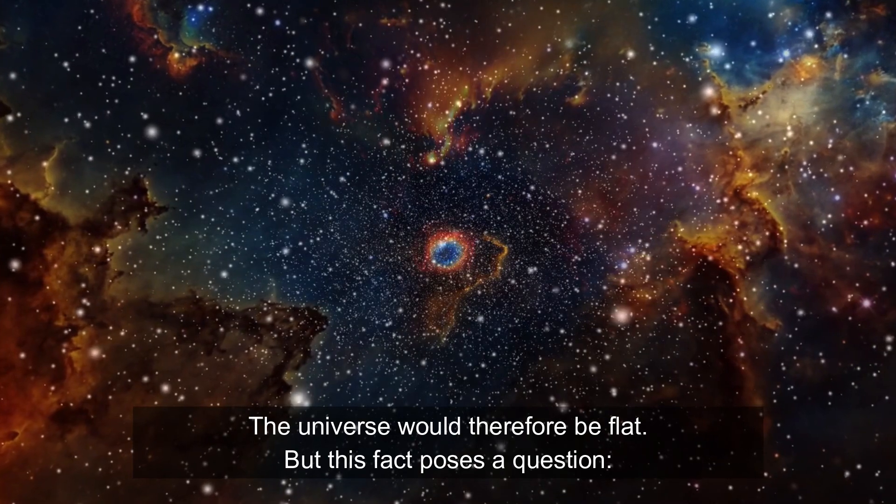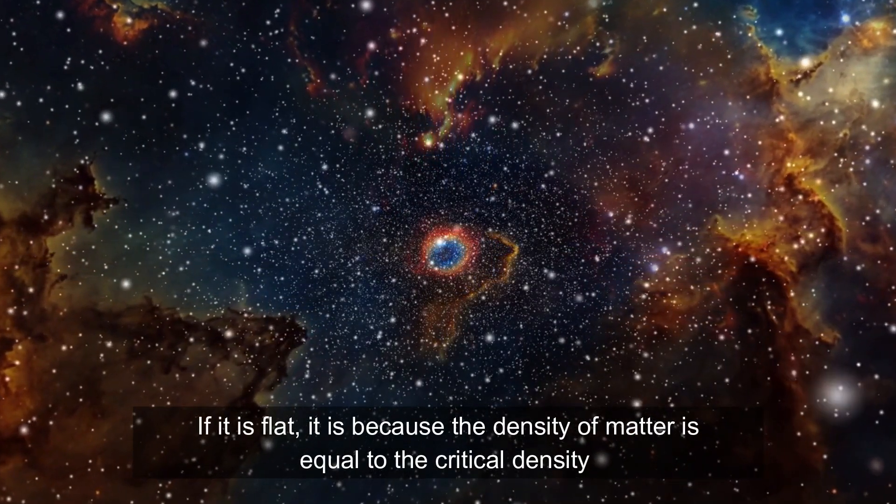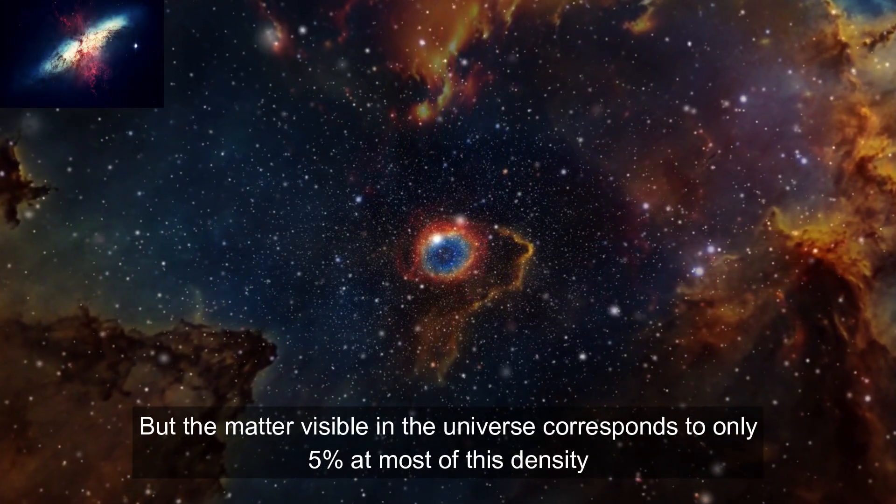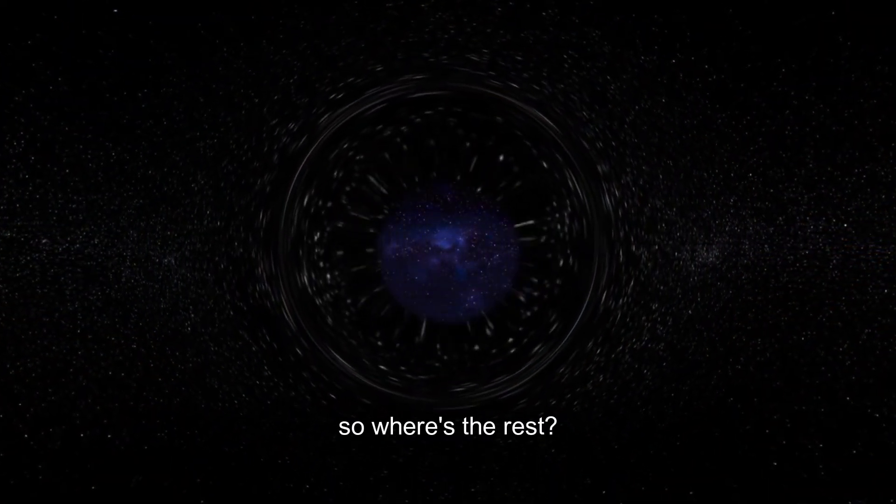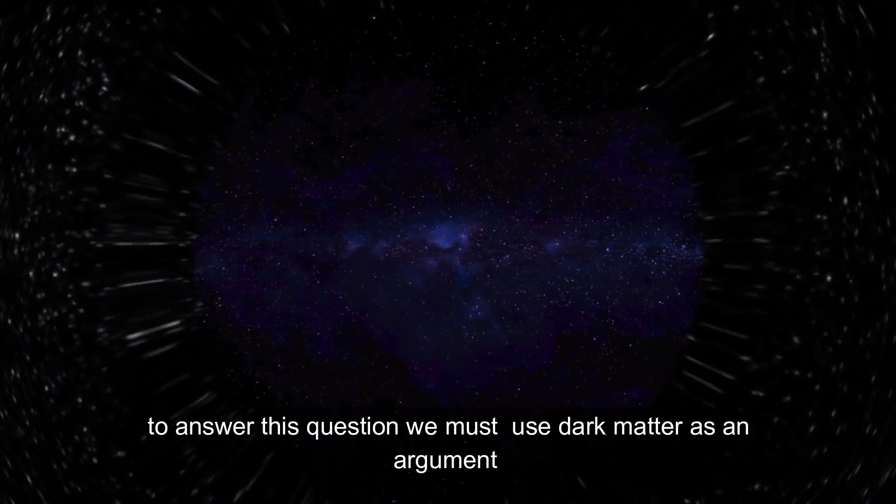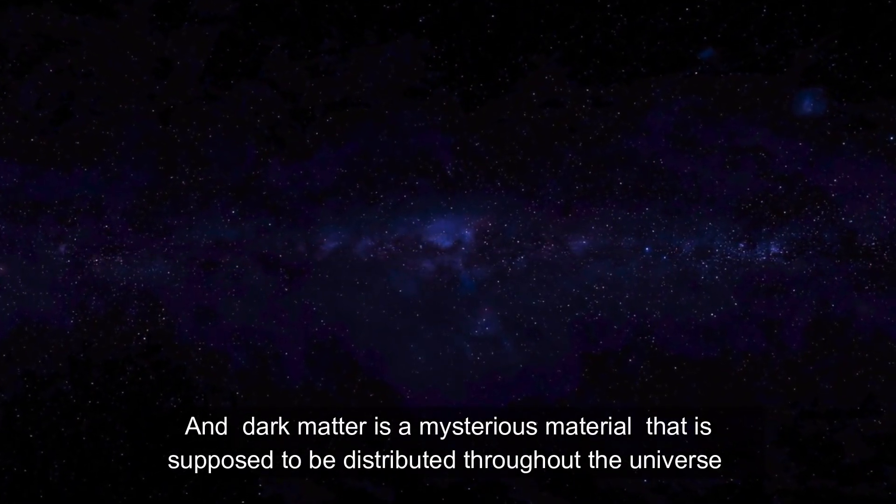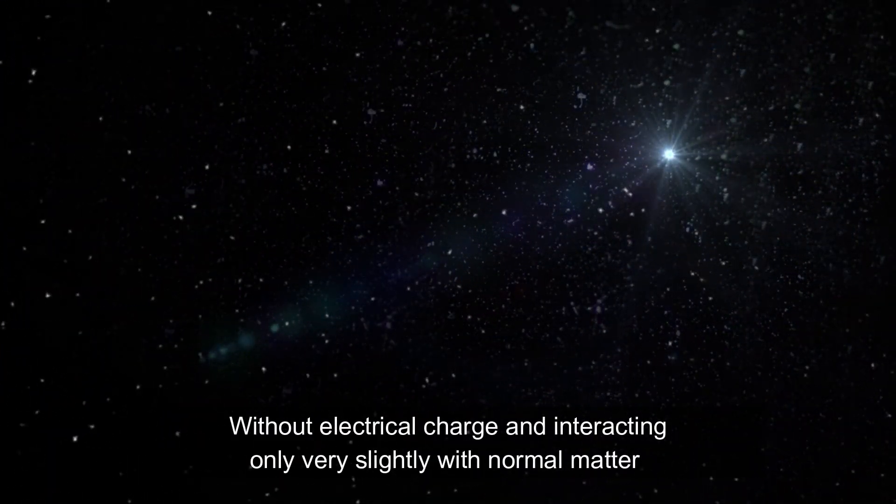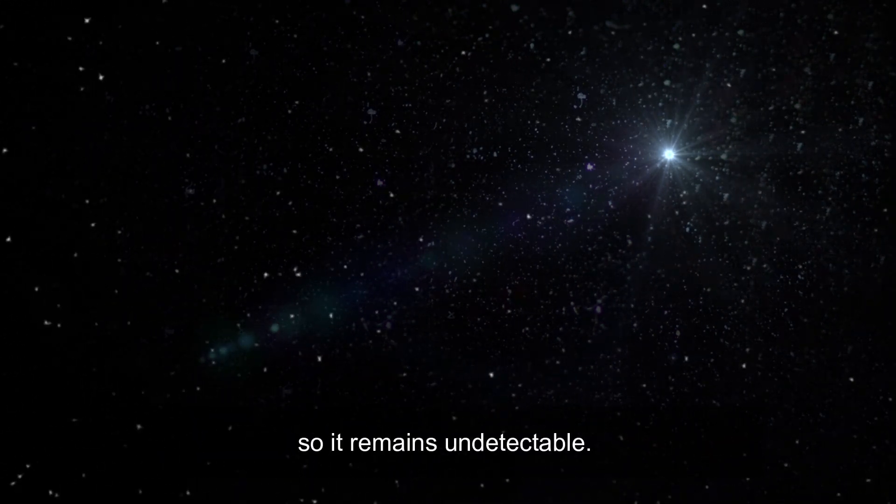But this fact poses a question. If it is flat, it is because the density of matter is equal to the critical density. But the matter visible in the universe corresponds to only 5% at most of this density. So what is the rest? To answer this question, we must use dark matter as an argument. Dark matter is a mysterious material that is supposed to be distributed throughout the observable universe without electrical charge and interacting only very slightly with normal matter. So it remains undetectable.